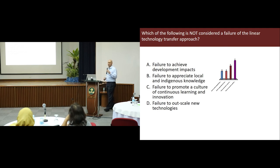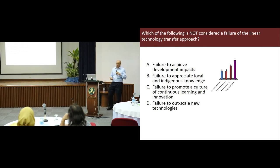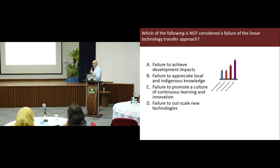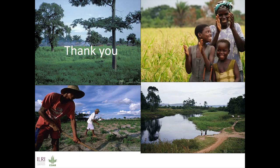Which of the following is not considered a failure of the linear technology transfer approach? A: failure to achieve development impact; B: failure to appreciate local and indigenous knowledge; C: failure to promote a culture of continuous learning and innovation; or D: failure to scale out new technologies. The majority of the room got it right — but a big chunk didn't. Scaling is actually the one thing that the technology transfer approach did very effectively. Think of the Green Revolution and so on. The other areas are all areas where it falls a bit short.